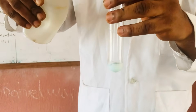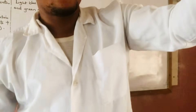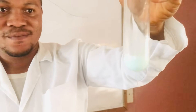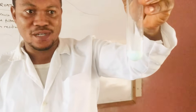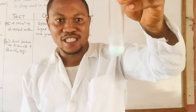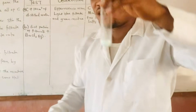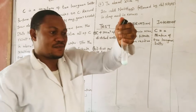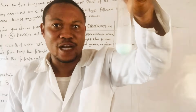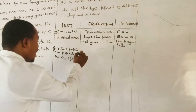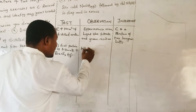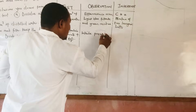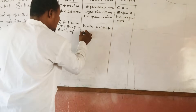Let's see what's going to happen. Look at that — wow! Look at this: a white precipitate is formed. Can you see that? A white precipitate formed. So on addition of barium chloride, the observation is: white precipitate formed.